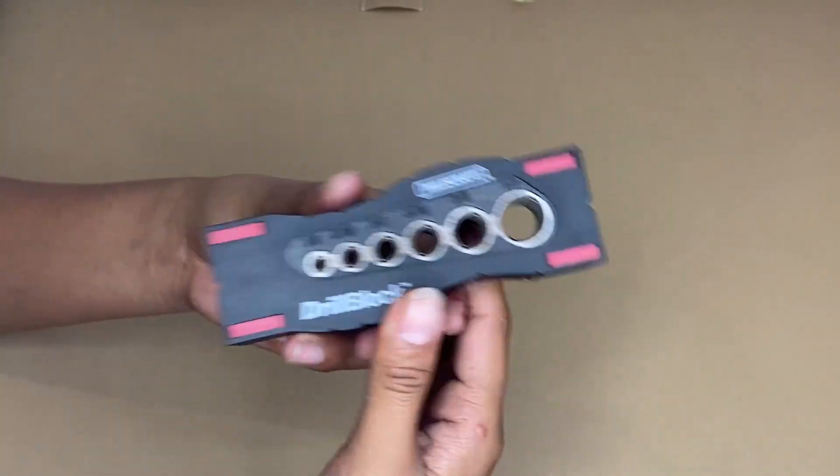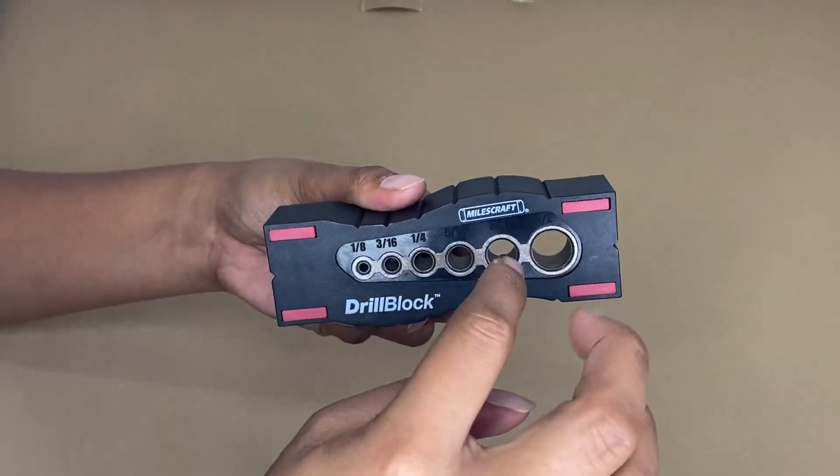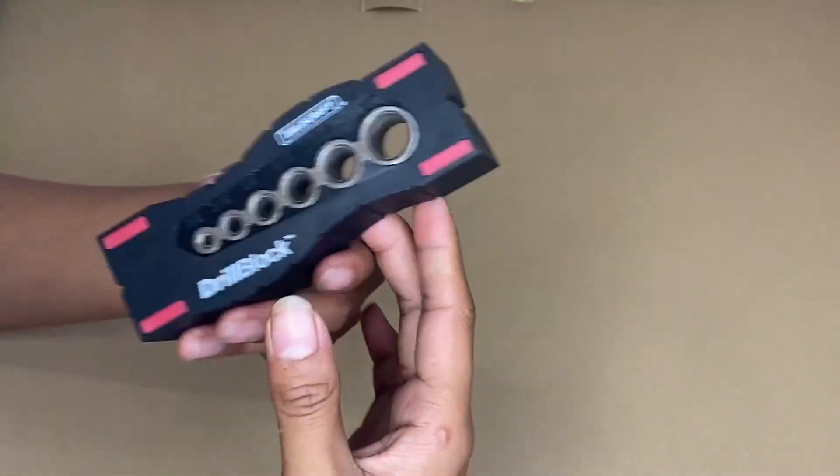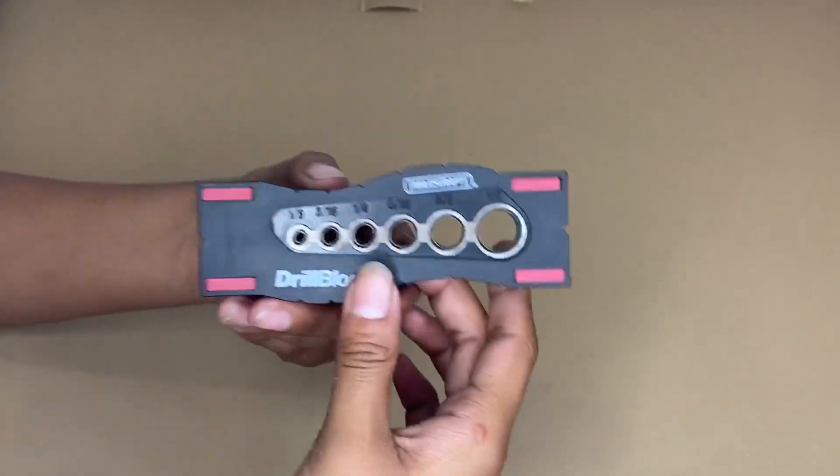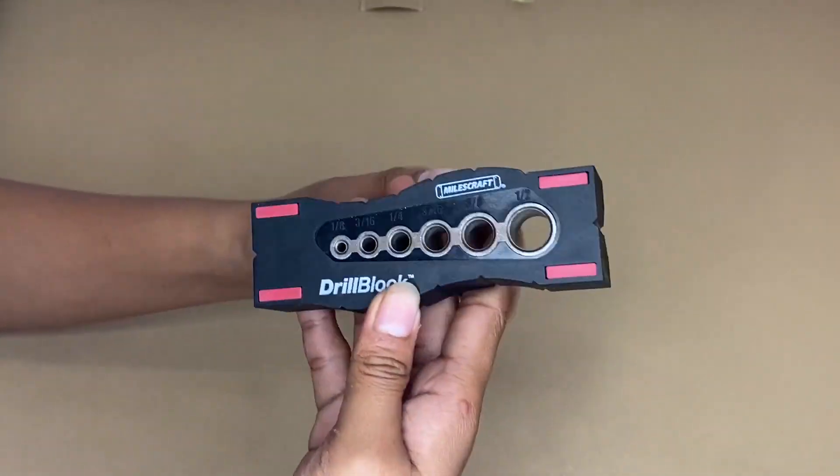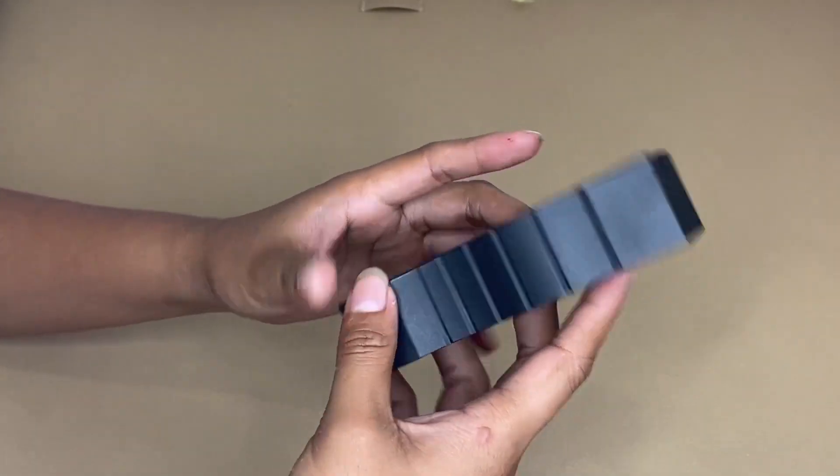It has a non-slip TPE fit on both the bottom and top surfaces to ensure there is no marring and slipping when drilling. As you can see, it also has center lines on all four sides of the drill block.